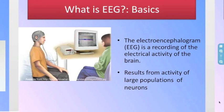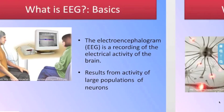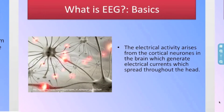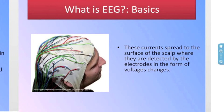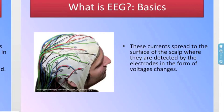It results from the activity of large populations of neurons. The electrical activity arises from the cortical neurons in the brain, which generate electrical currents that spread throughout the head. These currents spread to the surface of the scalp where they are detected by the electrodes in the form of voltage changes.